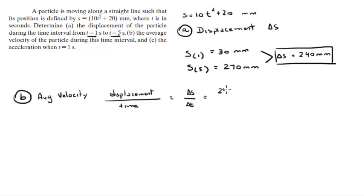ΔS we already found in part A to be 240 millimeters, and ΔT is 5 seconds minus 1 second, so it is 4 seconds. So the average velocity equals 60 millimeters per second.